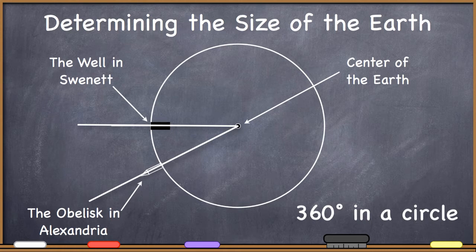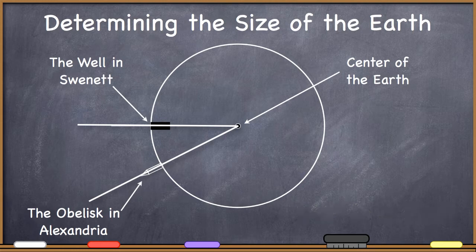Remember that there are 360 degrees in a circle. If we could figure out what portion of the entire circumference of the earth this angle is, and we knew the distance between these two points on the surface of the earth, then we could determine the circumference of the planet.